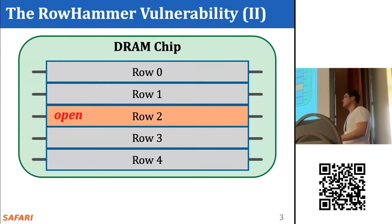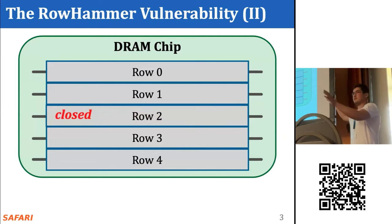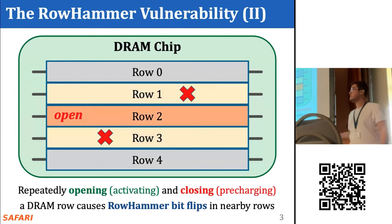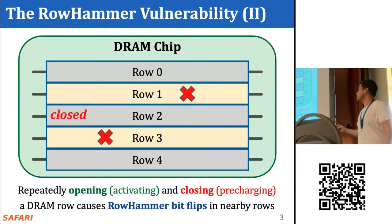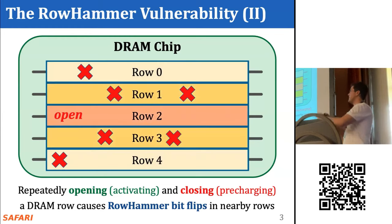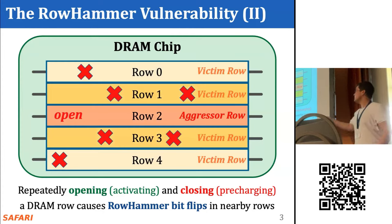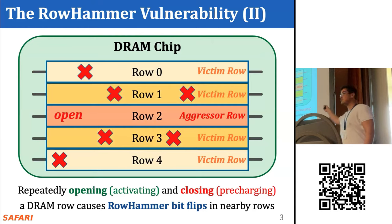When done with the data, the memory controller closes this row to access another row. Doing this repeatedly — opening and closing a row — induces bit flips on neighboring rows. Doing it even more increases the blast radius, inducing bit flips on many other rows. We call this the rowhammer phenomenon, and we refer to the rapidly opened and closed row as the aggressor row.